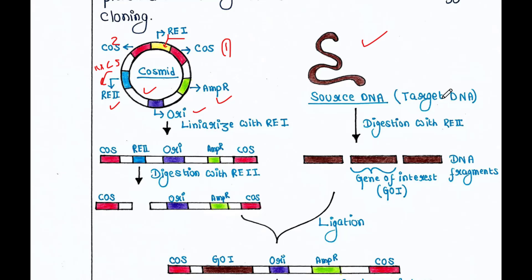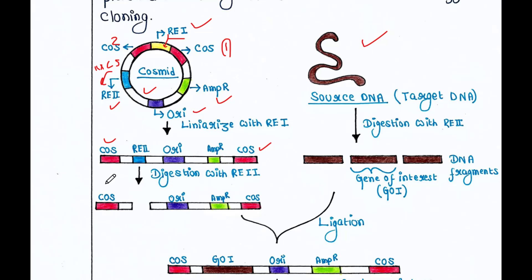Here we have the target DNA or source DNA that we want to insert into the Cosmid vector. The first step is to linearize the Cosmid by adding restriction enzyme 1, which cuts at the RE1 site. After linearization, from left to right the structure reads: cos site, then RE2, then ORI, then AmpR, then the second cos site. The two cos sites give you the sticky ends.